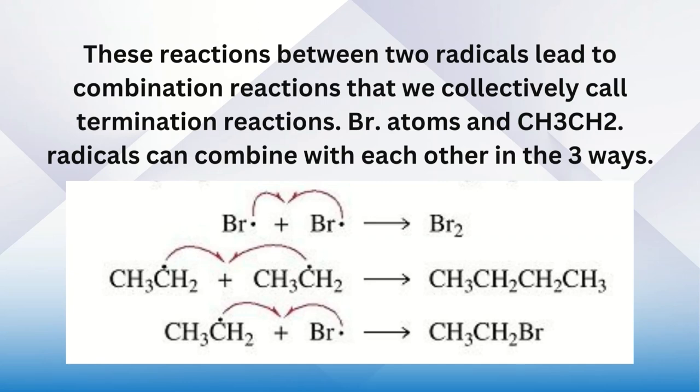Bromine atoms and CH₃CH₂ ethyl radicals can combine with each other in three ways: bromine radical with bromine radical forms bromine molecule Br₂, ethyl radical with ethyl radical combine and form butane CH₃CH₂-CH₂CH₃, and ethyl radical with